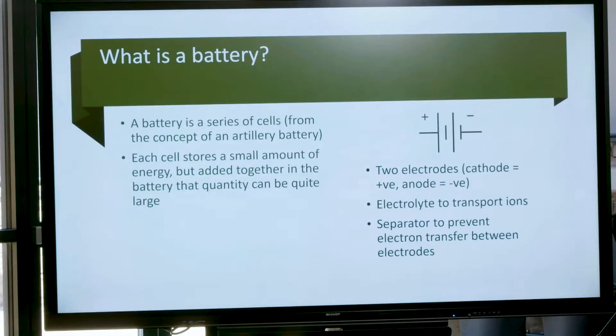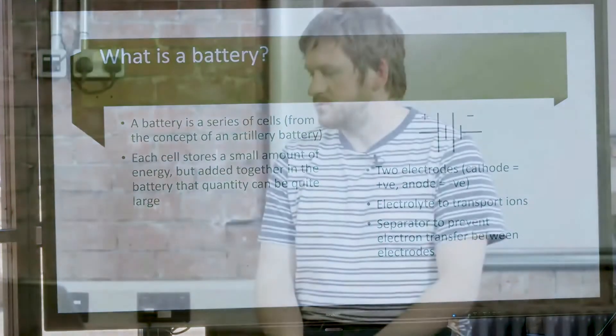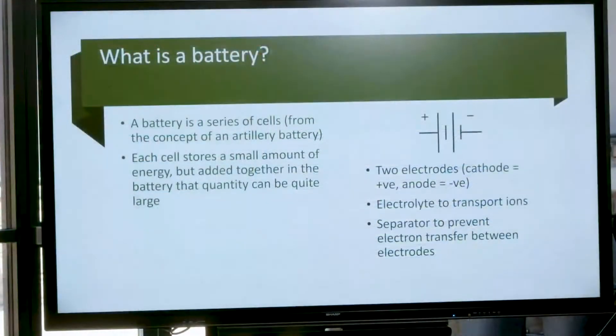At a larger scale, each cell stores a small amount of energy, but added together in a battery that can be a very large amount. For example, in a Tesla Model S the 70–90 kWh battery contains around 11,000 cells. Cells can be connected in series — which increases voltage — or in parallel, which increases capacity. Either way, each additional cell increases the total energy of the battery.